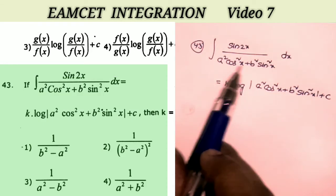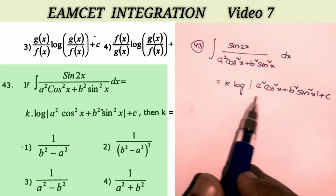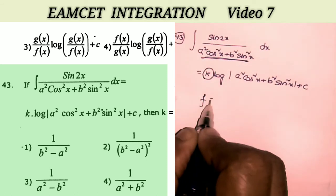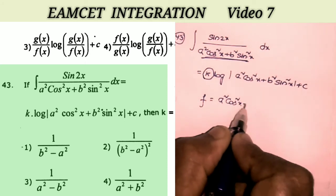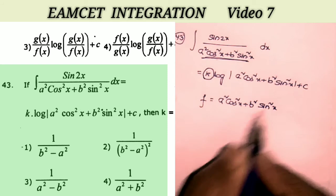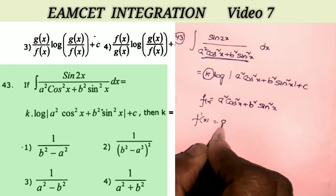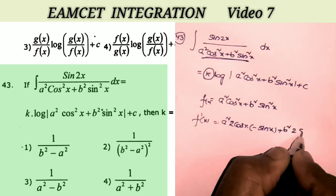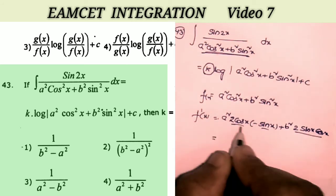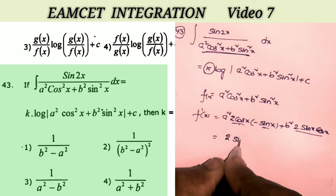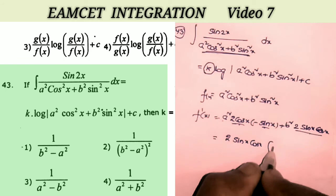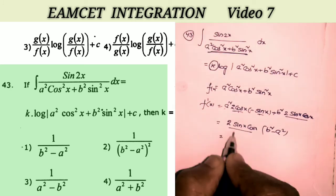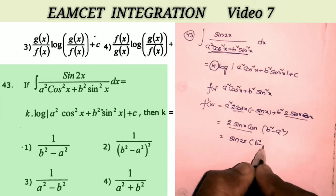Sum number 43: integral of sin 2x by (a² cos² x + b² sin² x) dx = k · log(a² cos² x + b² sin² x) + c. We need to find k. Let f(x) = a² cos² x + b² sin² x. Its derivative is a² · 2 cos x · (−sin x) + b² · 2 sin x · cos x. Taking 2 sin x cos x common, f'(x) = 2 sin x cos x (b² − a²) = sin 2x · (b² − a²).